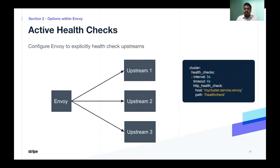On the right, you see an example of how we can configure health checks with Envoy. In this example, we have configured Envoy to make calls to mycluster.service.envoy every five seconds at the health check path. Now, if the request from Envoy fails due to a 5xx error, or if it times out after four seconds, Envoy is going to consider a particular upstream as unhealthy.